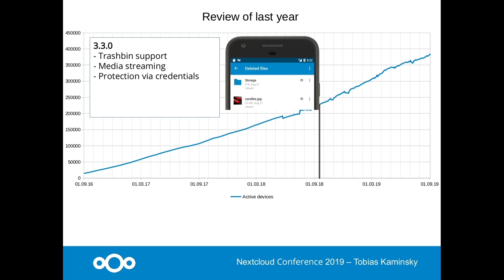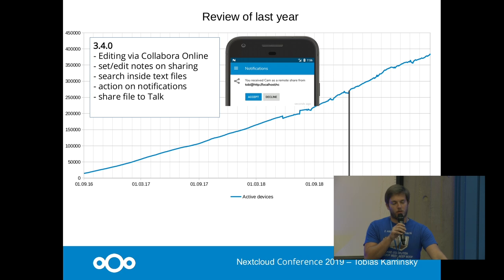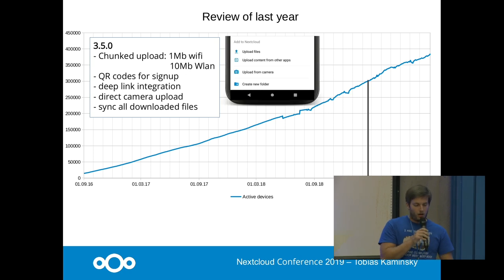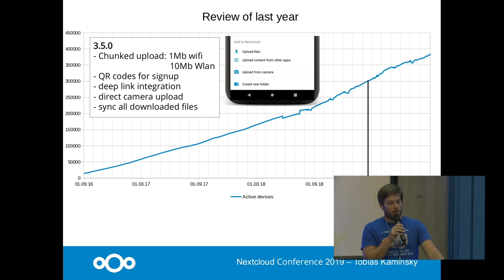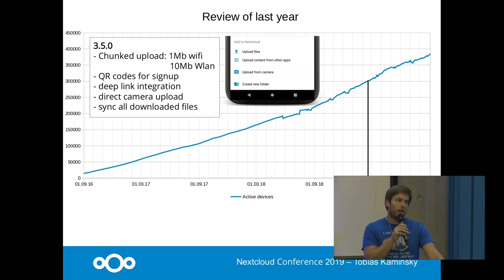In September we released version 3.3 with a major highlight of trash bin support. Next was 3.4 with action on notification — you could accept or deny a login, or edit text or spreadsheets directly via Collabora Online. With 3.5.0 we integrated the possibility to take an image and directly upload it to a folder, and also changed the uploading system so that on a mobile connection it uses 1 MB chunks and on Wi-Fi 10 MB chunks.